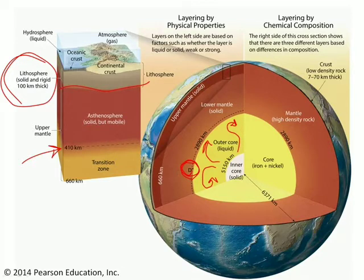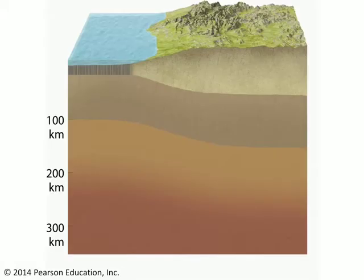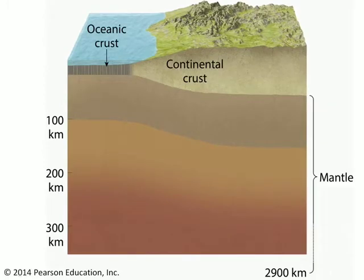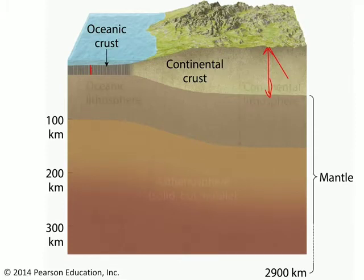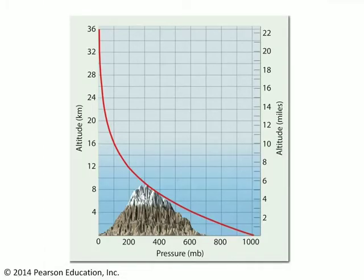There are two different kinds of crust, if we wanted to focus on that. So let's zoom in there and take a look at those two different kinds of crust. We've got the continental crust and the oceanic crust. The continental crust is thicker overall than the oceanic crust, and it's also made out of a different kind of rock. The oceanic crust is relatively thin and made out of a more dense kind of rock.